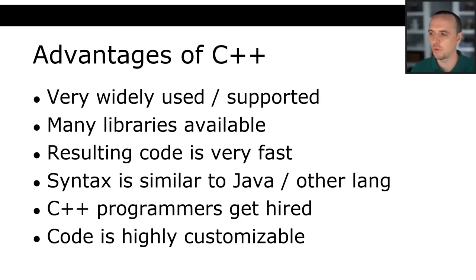C is a procedural mid-to-low level language. There is no built-in object-oriented programming in C. C is very popular for system software — Linux is written in C — for writing drivers, embedded stuff, operating systems, et cetera. C greatly influenced the development of C++.